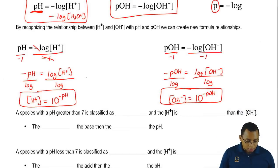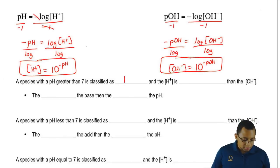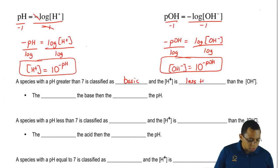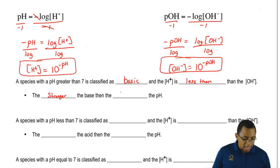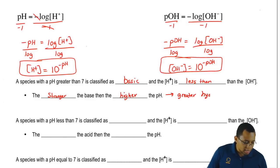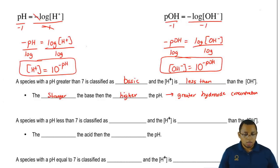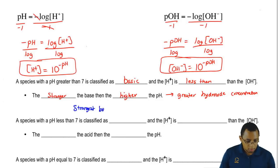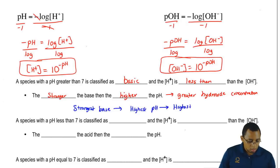A species with a pH greater than 7 is classified as basic. If you're basic, your H-plus concentration is less than your OH-minus concentration. We can also say that the stronger the base, the higher the pH. The higher the pH, the greater your hydroxide concentration. The strongest base would have the highest pH and therefore have the highest OH-minus concentration.